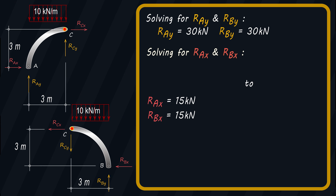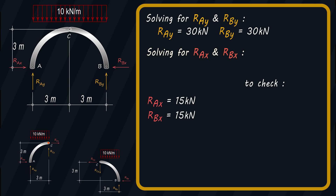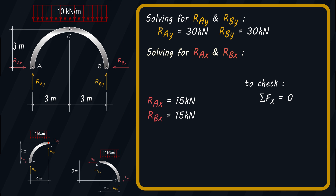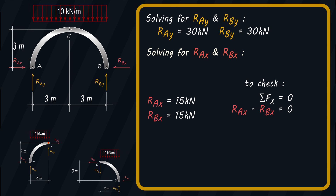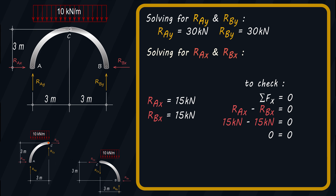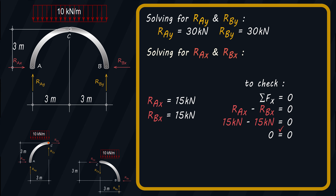To check, we can use the free body diagram for the whole structure. We'll sum the forces along X, which should be equal to zero, taking forces directed to the right as positive. We have RAX minus RBX equals zero. 15 kN minus 15 kN is indeed equal to zero. Therefore, our answers for RAX and RBX are correct.